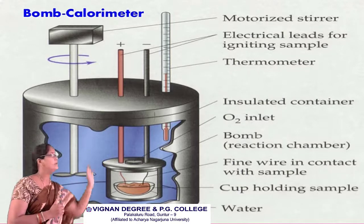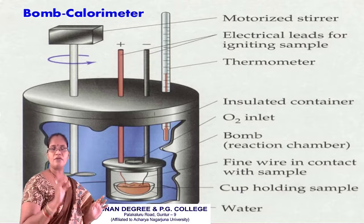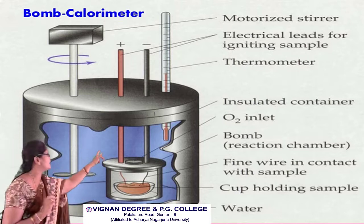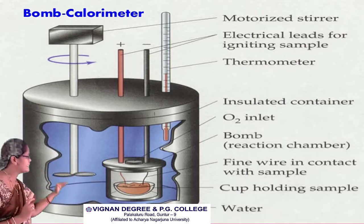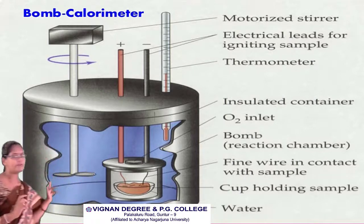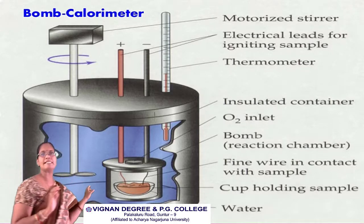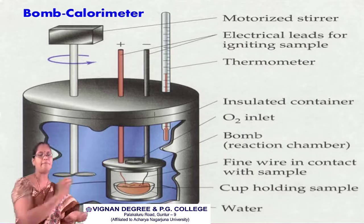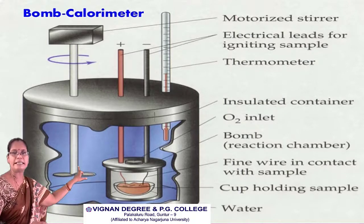The oxygen is provided into the container at a pressure of 300 pounds per square inch, so the pressure inside the bomb calorimeter is 300 pounds per square inch. The bomb is the cup-shaped vessel in which the food sample is pressed and placed. The insulated container is filled with a known amount of water.